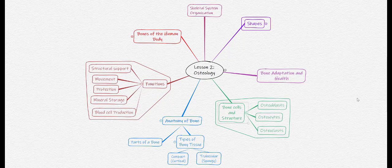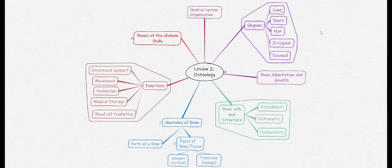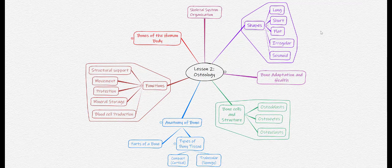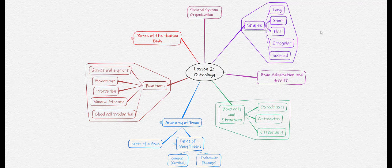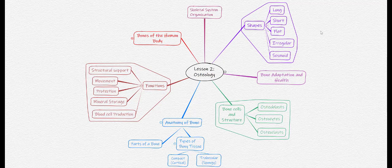Those bones are important for understanding how bone adapts and what makes for a healthy bone. We will then start to zoom back out and look at bones classified according to their shape, including long bones, short bones, flat bones, irregular bones, and sesamoid bones. We will then look at how the skeletal system is organized before looking at the individual bones of the lower extremity, trunk, and upper extremity.